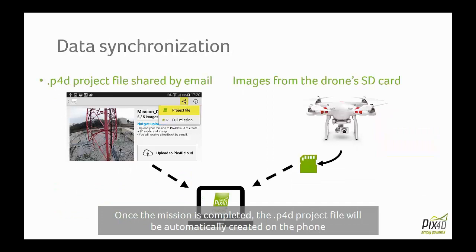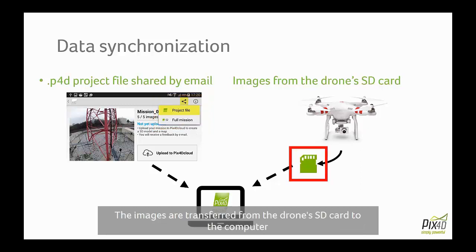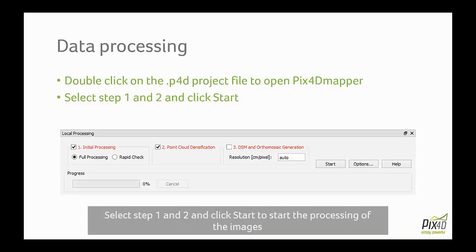Once the mission is completed, a P4D project file is created on your phone and can be shared by email using our application to access it on a computer. The images were taken from the drone's SD card and transferred to the computer. The next step is to process images using Pix4D. Simply double click on the P4D project file to open Pix4D mapper and select step 1 and 2 and click start, and the processing will start.